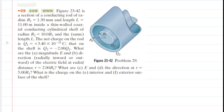In part A, we have to find the magnitude of the electric field at a radial distance of 2 times R2. R2 is the radius of that cylindrical shell, so we need the electric field at a distance twice that radius, which means we're calculating the electric field on the outside of this entire structure.